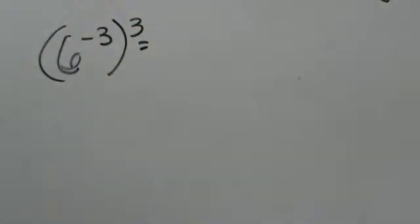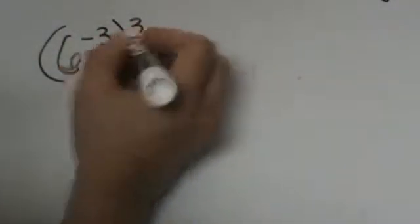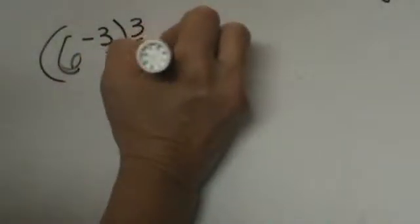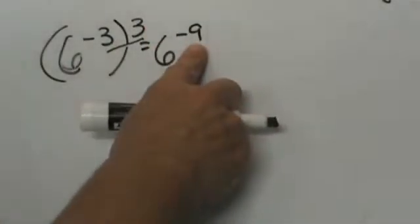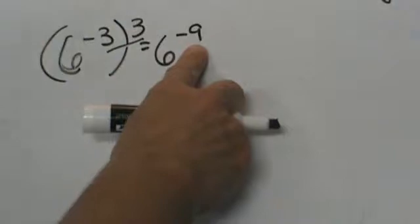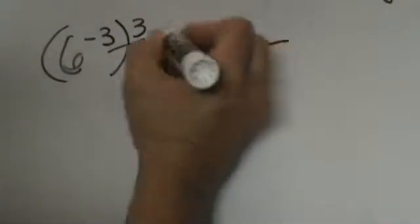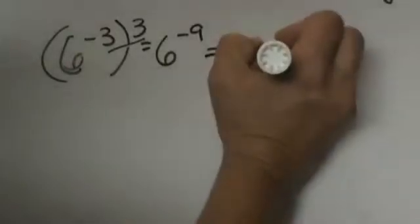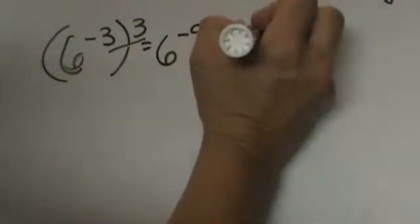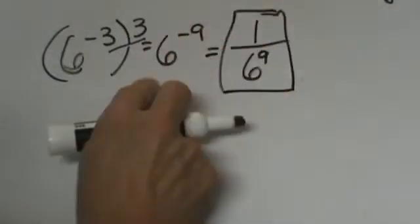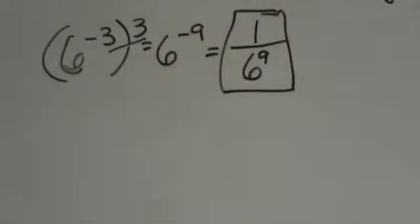Now let's look at some that are a little more involved with negatives and positives. Let's take 6 to the negative 3rd, all cubed. We multiply our exponents, so we get 6 to the negative 9th. We cannot write our answer with a negative exponent — we need to write it as a positive exponent. What that negative exponent indicates is that the term belongs on the bottom of a fraction. So I can move 6 to the 9th to the bottom of the fraction with a 1 up top. That is how you rewrite 6 to the negative 9th.